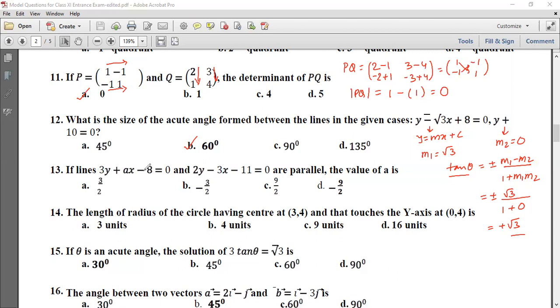Problem 13: Lines 3y plus ax minus a equals 0 and 2y minus 3x minus 11 equals 0 are parallel. Then value of a. Slope is minus x coefficient divided by y coefficient, which is minus a by 3. In the second case, slope m2 is minus into minus plus, which is 3 by 2. For parallel lines, slopes are equal, so minus a by 3 equals 3 by 2. Therefore a equals minus 9 by 2.